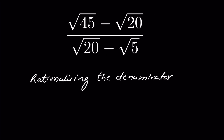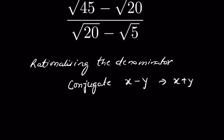Here we have square root of 20 minus square root of 5 in the denominator. So we will multiply and divide by the conjugate of square root of 20 minus square root of 5. The conjugate of x minus y is x plus y and vice versa. So the conjugate of square root of 20 minus square root of 5 is square root of 20 plus square root of 5.